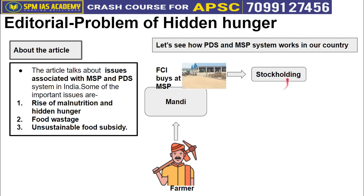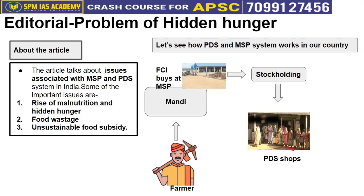FCI then distributes the stock from its godowns to different PDS shops, from where poor people — the intended beneficiaries — receive the food grains. The problem is that MSP has become a kind of political tool. Every new government that comes in raises the MSP further.